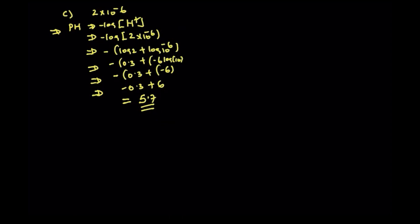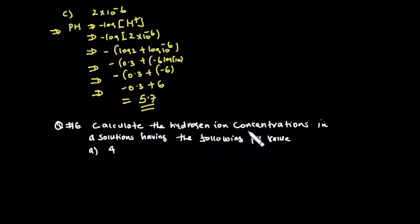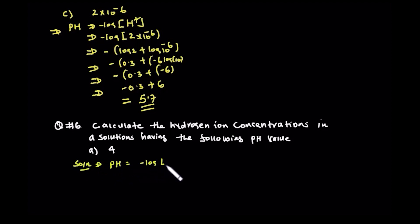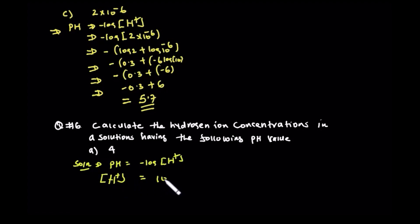Now let's come to the next question. Question number six: calculate the hydrogen ion concentrations in a solution having the following pH. So what do you mean by hydrogen ion concentration? Here is the solution — hydrogen ion concentration. So we have to get it. The hydrogen ion concentration equals 10 to the power of minus pH.